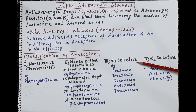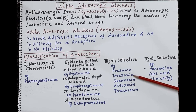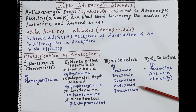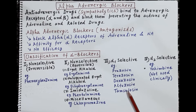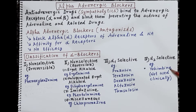The third category of alpha blockers are the alpha-1 selective blockers. These are alpha blockers that block only alpha-1 receptors. Important drugs in this category include prazosin, terazosin, doxazosin, alfuzosin, and tamsulosin. These alpha-1 selective drugs are used in the treatment of hypertension and benign prostate hyperplasia. The fourth category are alpha-2 selective blockers, for example yohimbine, which is used only experimentally and not clinically.